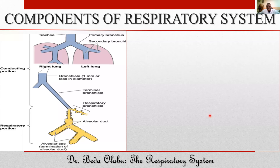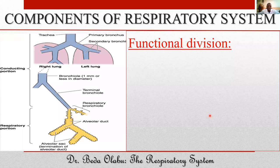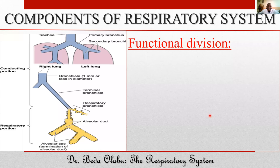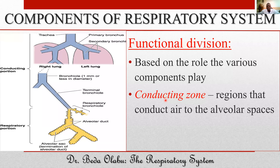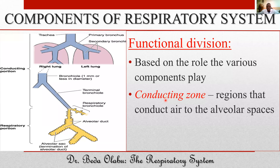Functionally, we divide the components of the respiratory system based on the various roles that these components play. There are those responsible for conducting air from the atmosphere all the way to the alveoli — they constitute the conducting zone of the respiratory tree. Then there are those responsible for gas exchange — they constitute the respiratory zone. The respiratory zone is only found in the lower respiratory tree.